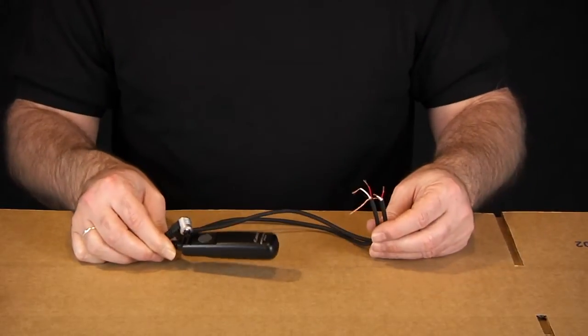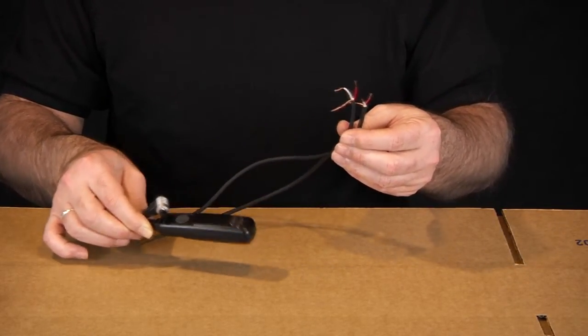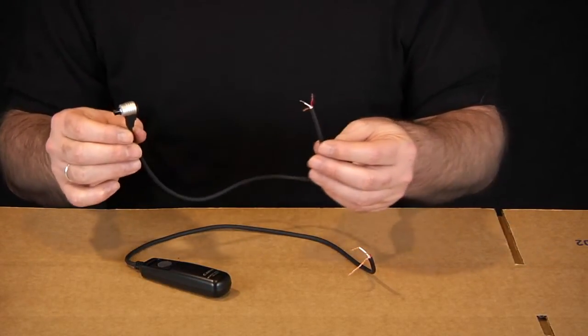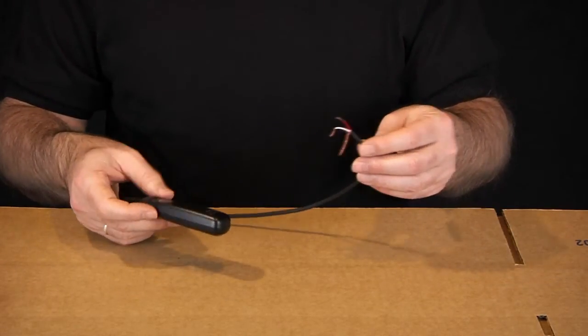The first thing I did was I cut the cable to the RS80N in half. That leaves me a nice length of cable for the connector end for the camera, and it also leaves a nice length for the actual remote itself.